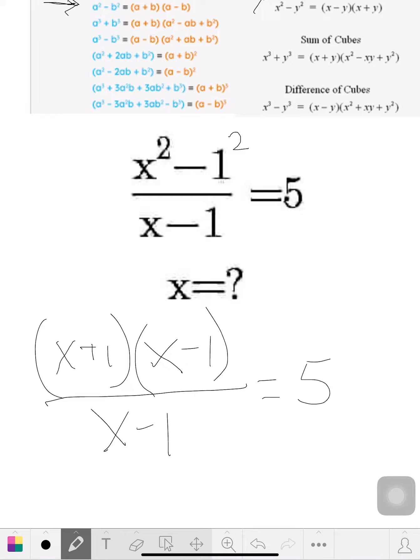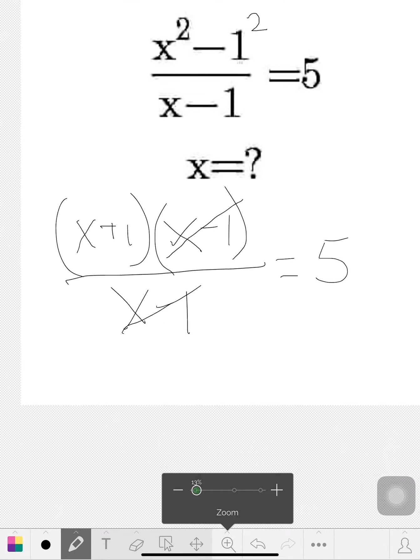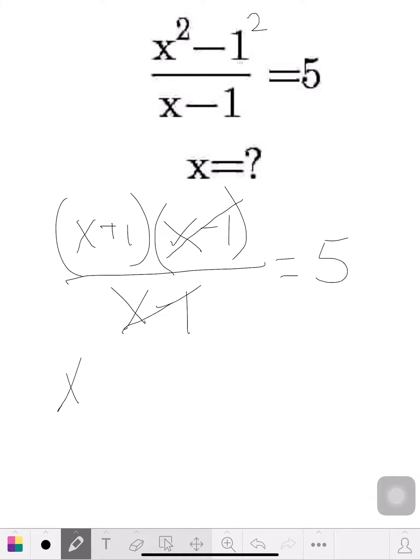So as we look at it, these two x minus 1s cross each other out. So what we have left is x plus 1 equals 5.